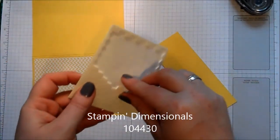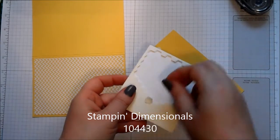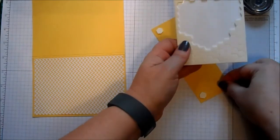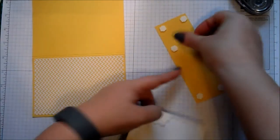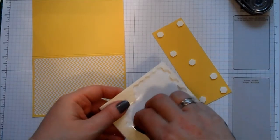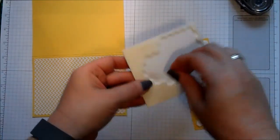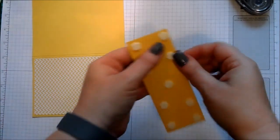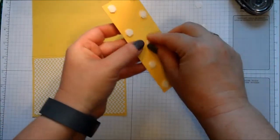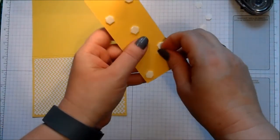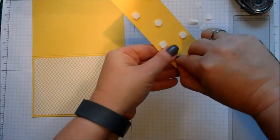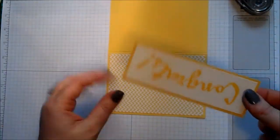I'm going to pop that up on dimensionals. I'm going to use quite a few dimensionals because it is a big piece to stick up. In fact, let's just put some more on. You probably don't need this many - this is probably overkill, but we don't want it sagging in the middle. A saggy middle is never good.